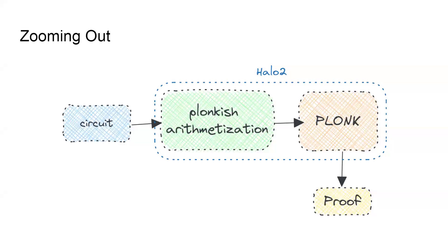Zooming out, Halo 2 is a library that provides a frontend for writing circuits. Using its table-like structure, it performs arithmetization — creating constraints — and produces proofs using Plonk. That is a basic idea of Halo 2. We'll take a few questions and then go into a live example.